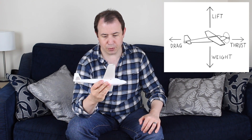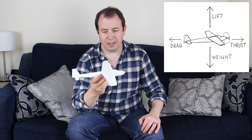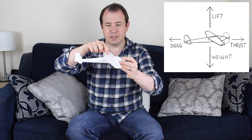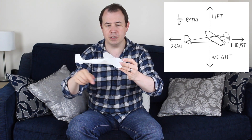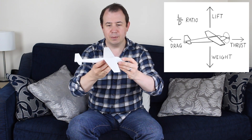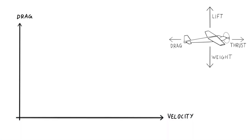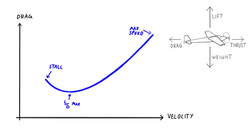So those are the four forces. As I've alluded to before, what we have is something called a lift-to-drag ratio. We can expect the aircraft to produce some kind of drag force, and that will vary depending on how fast the aircraft is flying.